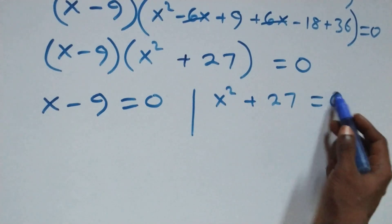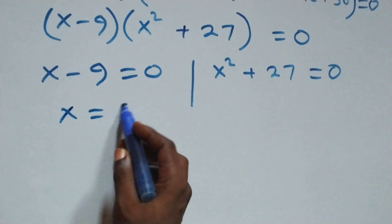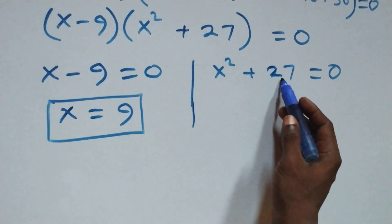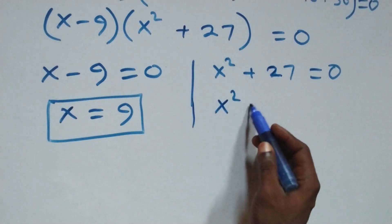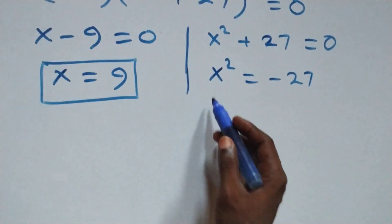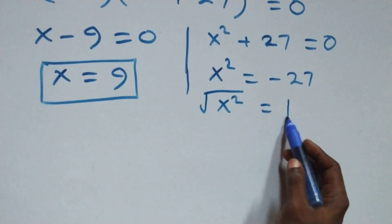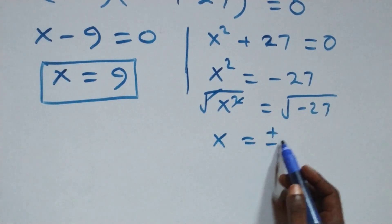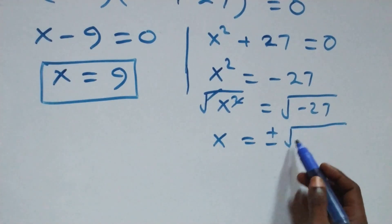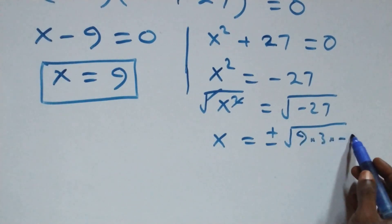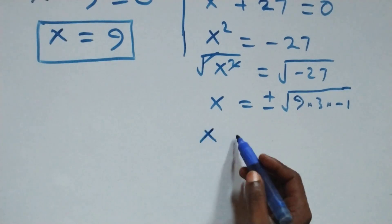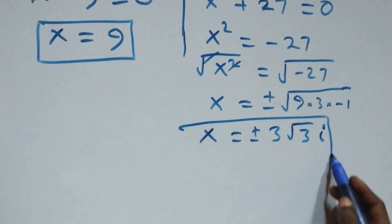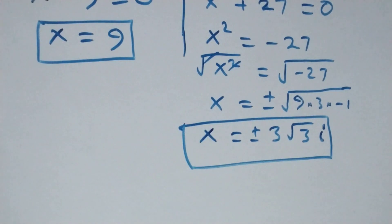We have two possible cases: x minus 9 equals to 0, giving x equals 9 — a real solution. Or x squared plus 27 equals 0, so x squared equals minus 27. Taking the square root of both sides: x equals plus or minus square root of 9 times 3 times minus 1, giving x equals plus or minus 3 root 3 times i — two more complex solutions.